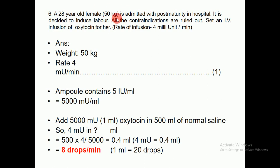To summarize: the patient is 28 years old, weight 50 kg, admitted with post-maturity. We decided to induce labor, all contraindications were ruled out, and the IV infusion of oxytocin at a rate of 4 milli-units per minute works out to 8 drops per minute.